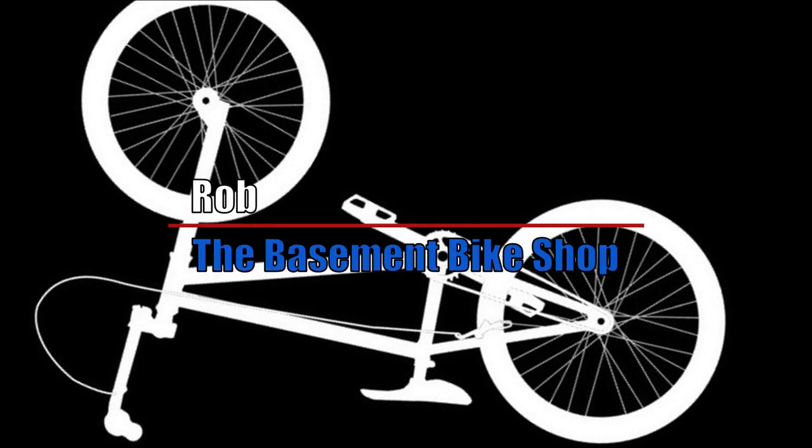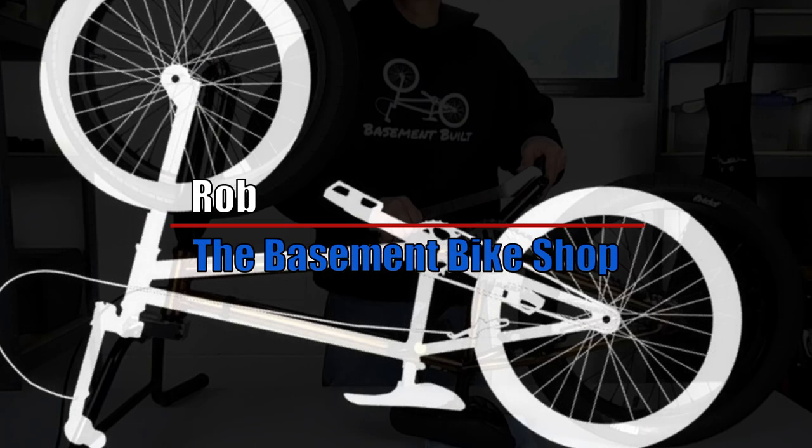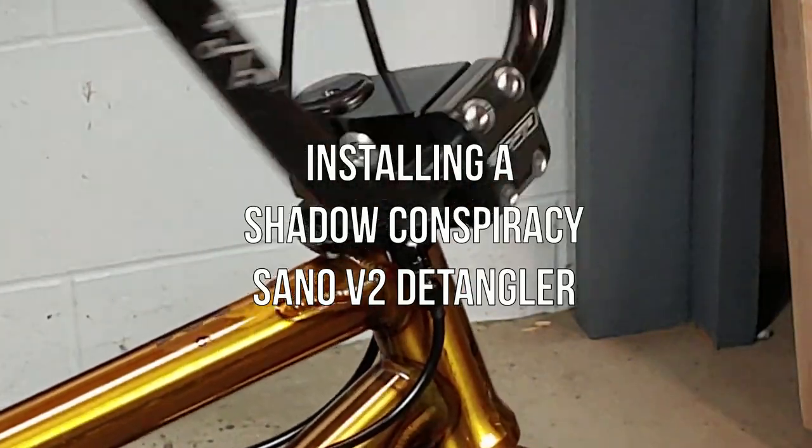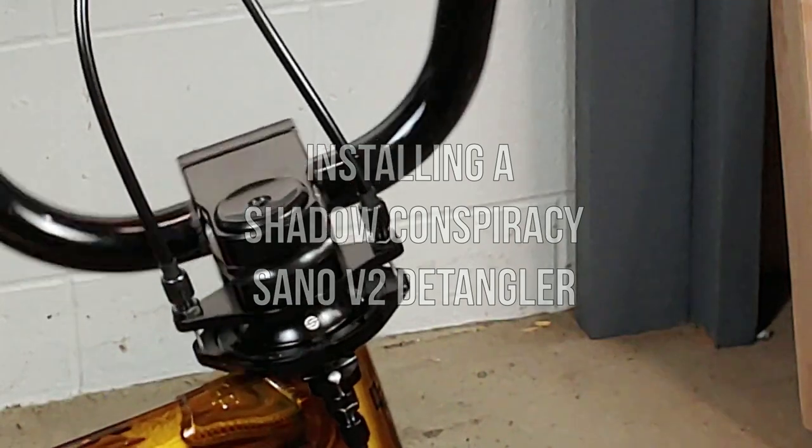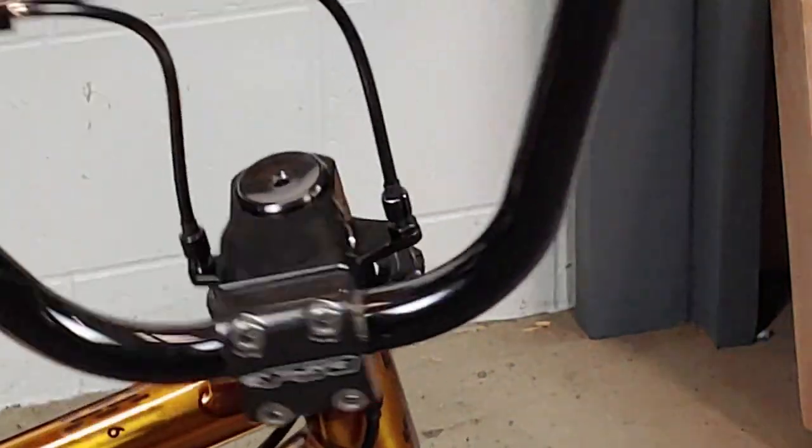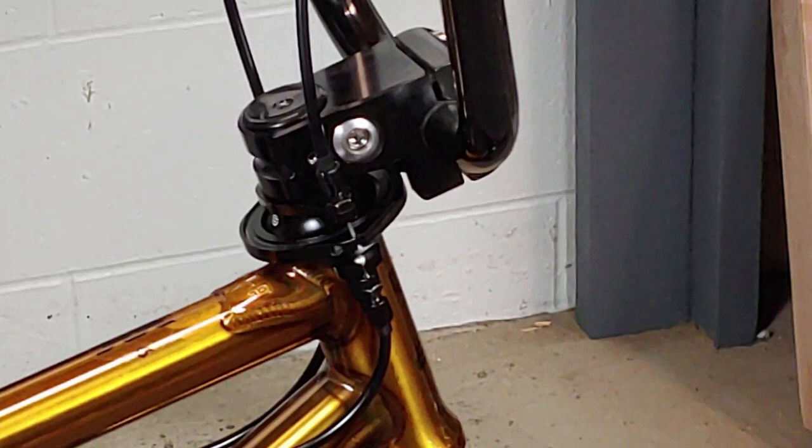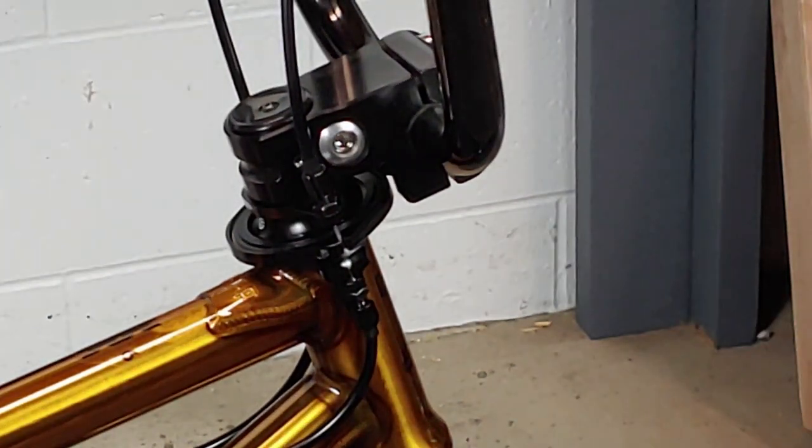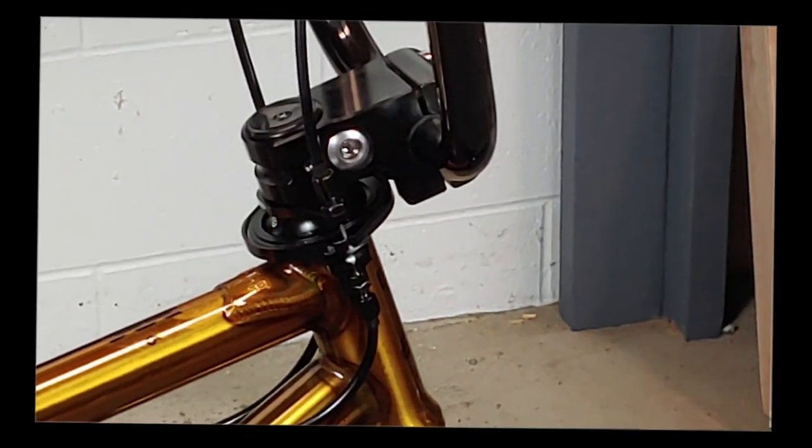What's up everybody, it's Rob here from the Basement Bike Shop. In this video I'm going to show you how to install a Shadow Conspiracy Sano V2 detangler. This detangler is by far one of the smoothest I've ever used because of the sealed bearing system, and it installs very similar to any other detangler out there.